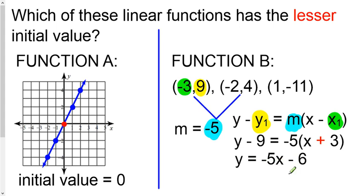So what's my y-intercept, what's my initial value over here? It's negative 6. And this time the question is, which one is smaller, which one is lesser? Well, negative 6 is less than 0, so function B is going to be your answer.